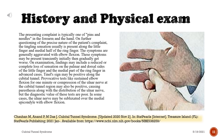On examination, findings may include reduced or complete loss of sensation on the palmar and dorsal sides of the little finger and the medial part of the ring finger in advanced cases. Tinel's sign may be positive along the cubital tunnel. Provocative tests such as sustained elbow flexion for one minute or compression of the ulnar nerve at the cubital tunnel region may also be positive, causing paresthesia along the distribution of the ulnar nerve, though the diagnostic value of these tests is poor. In some cases, the ulnar nerve may be subluxated over the medial epicondyle with elbow flexion.